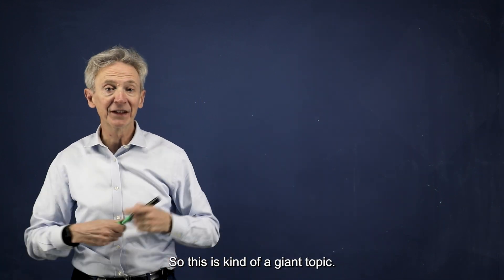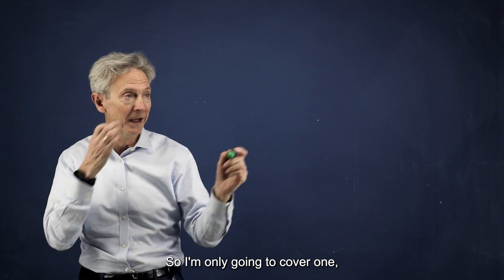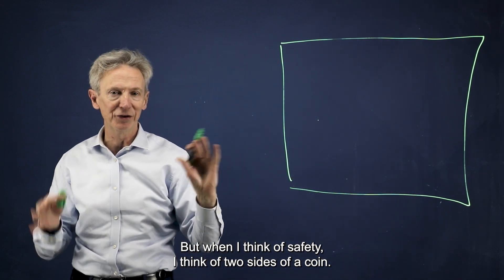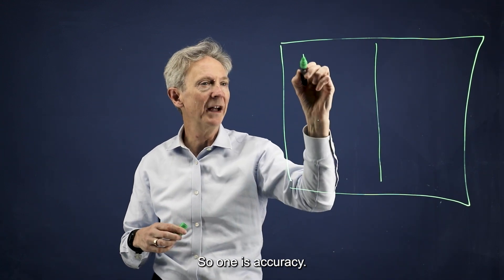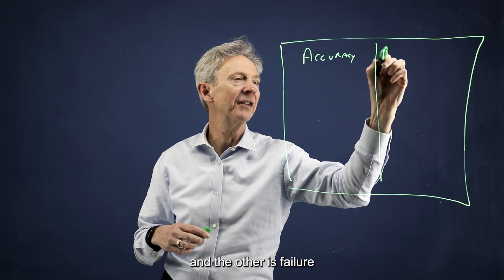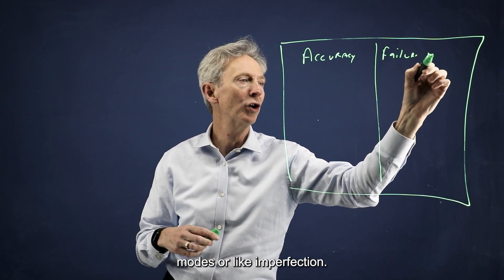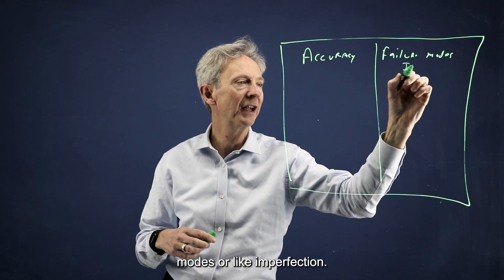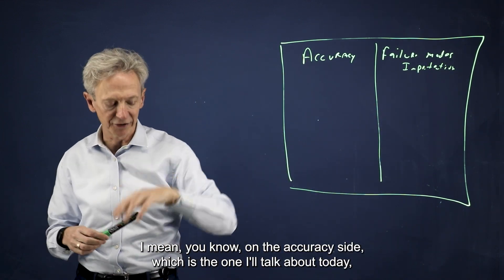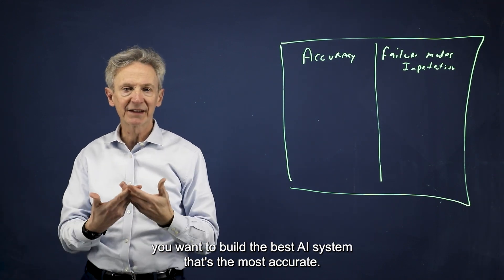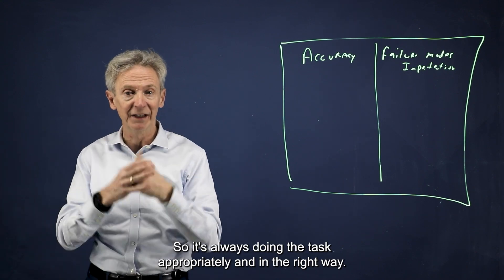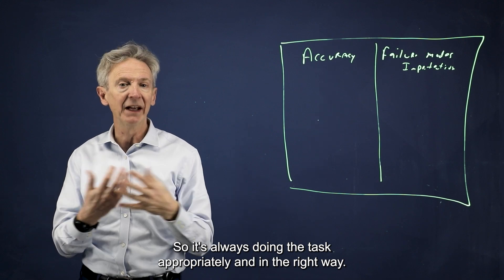Okay, so this is kind of a giant topic. I'm only going to cover one part of it. When I think of safety, I think of two sides of a coin. One is accuracy. And the other is failure modes or imperfection. On the accuracy side, which is the one I'll talk about today, you want to build the best AI system that's the most accurate. If you can, make it 100% accurate so it's always doing the task appropriately and in the right way.